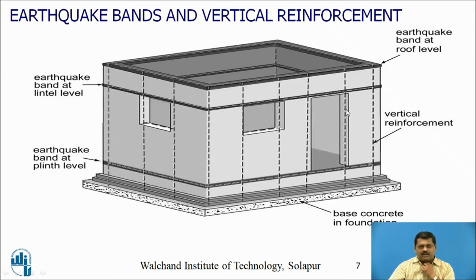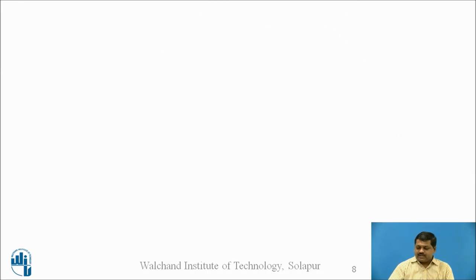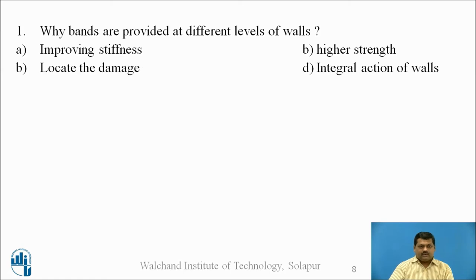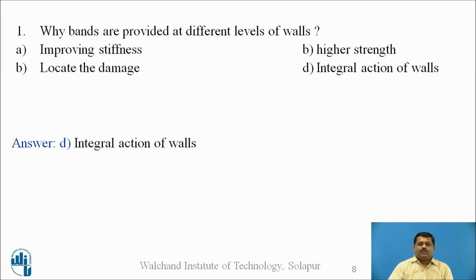Vertical reinforcement should be provided at building corners and at openings. Now here is a question for you: why are bands provided at different levels of the walls? The four options are: (a) improving stiffness, (b) higher strength, (c) to locate damage, or (d) integral action of the walls. Pause the video and write down your answer. The correct answer is: integral action of the walls.